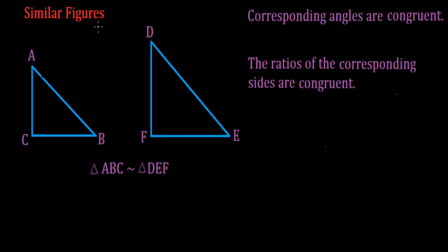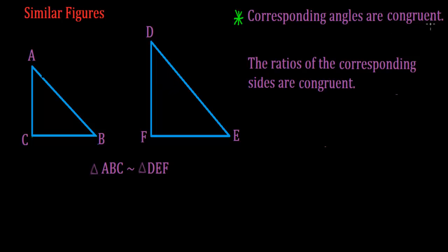When we talk about similar figures, there are two properties that are very important. The first property says that when two figures are similar, corresponding angles are congruent. Corresponding means which angle in this figure corresponds to which angle in the other figure. Congruent means that they have the same measure.